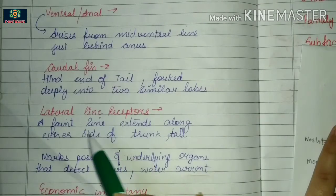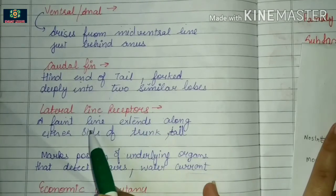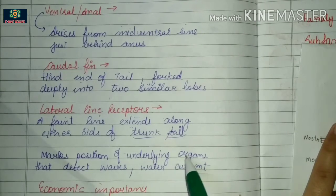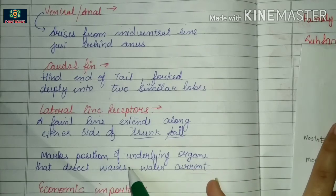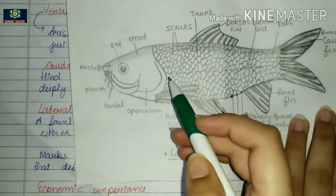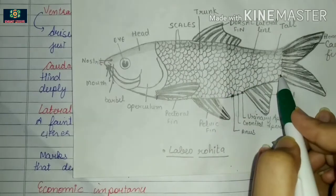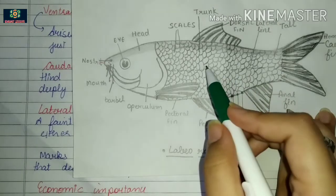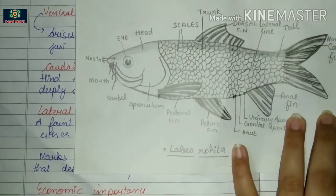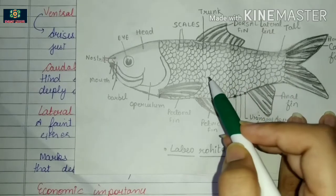A faint lateral line runs along the trunk and tail region. This marks the position of underlying lateral line receptors, which are sense organs that detect water currents and waves.